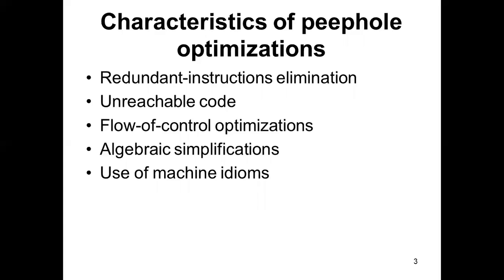In peephole optimization, we identify the shorter sequence of instructions in the target program that should be replaced by a shorter and faster sequence of instructions. That is called peephole optimization. The characteristics of peephole optimizations are: redundant instruction elimination, unreachable code, flow of control optimizations, algebraic simplifications, and use of machine idioms.